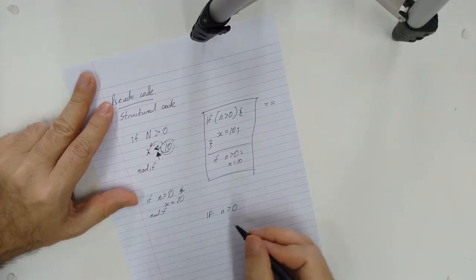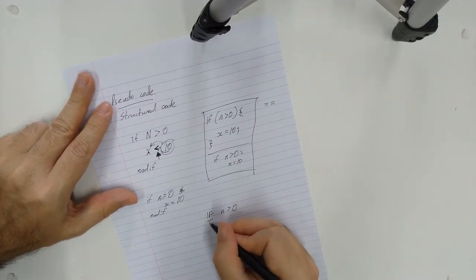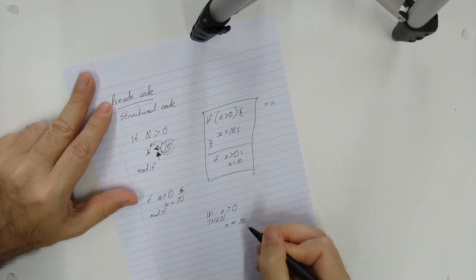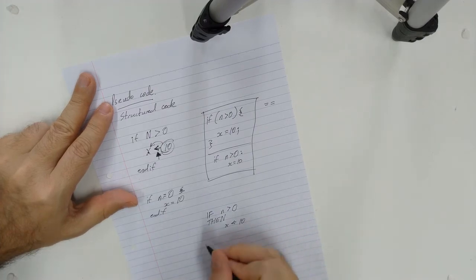So this statement in the IGCSE course would be IF, if N is bigger than zero, and then they actually indent, then they say the word THEN, X is equal to 10, and END IF.